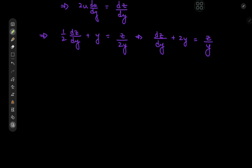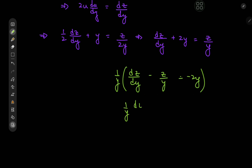Let's write this in a slightly different manner. We're going to write this as dz/dy minus z/y equal to negative 2y, because we're in search of an integrating factor. Expanding by 1/y, we have (1/y)·(dz/dy) minus z/y² equal to negative 2.